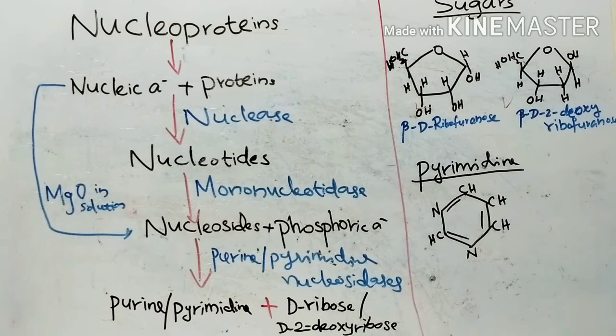Then we will move to pyrimidine bases. Pyrimidine bases found in nucleic acids are mainly of three types: cytosine, thymine, and uracil. This cytosine is found both in DNA and RNA. Chemically, it is 2-deoxy-4-amino pyrimidine.